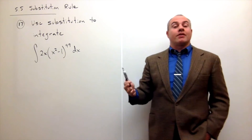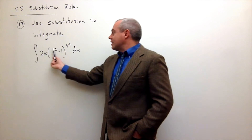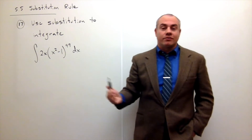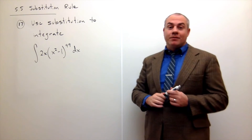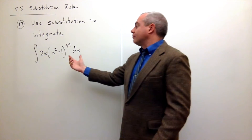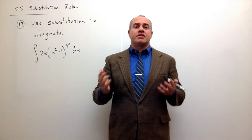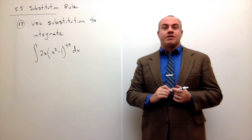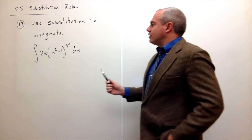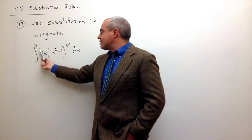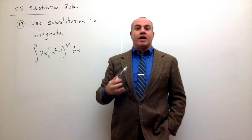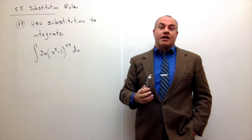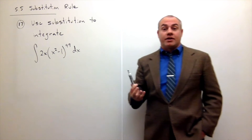The first thing we could do — which would be extremely painful — is multiply this out to the 99th power and then integrate. That seems rather impractical, so we'd like another way to do a problem like this. The way we do this is called substitution, sometimes U-substitution, because the letter we typically use is U. What we're going to do is change all of the x's in this problem into the variable U, and hopefully by doing so we can easily integrate.